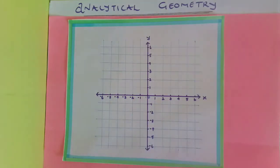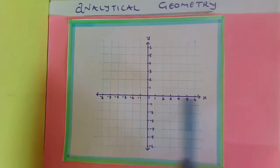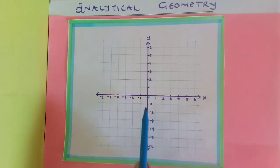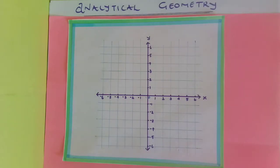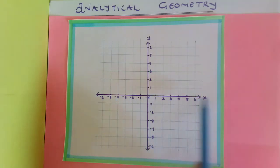This is a Cartesian plane in two dimensions. There is the y-axis, which is vertical, and there is the x-axis, which is horizontal. The y-axis and the x-axis are perpendicular to each other, meaning this angle is 90 degrees. They intersect at the origin. The equation of the y-axis is x = 0, and the equation of the x-axis is y = 0.